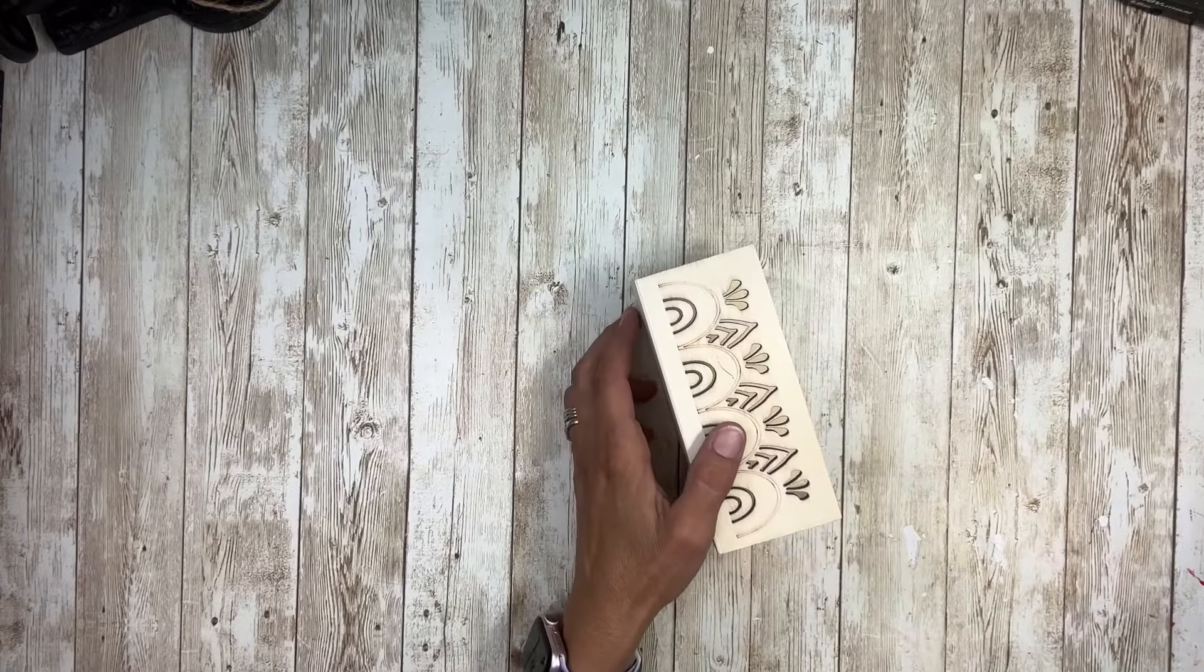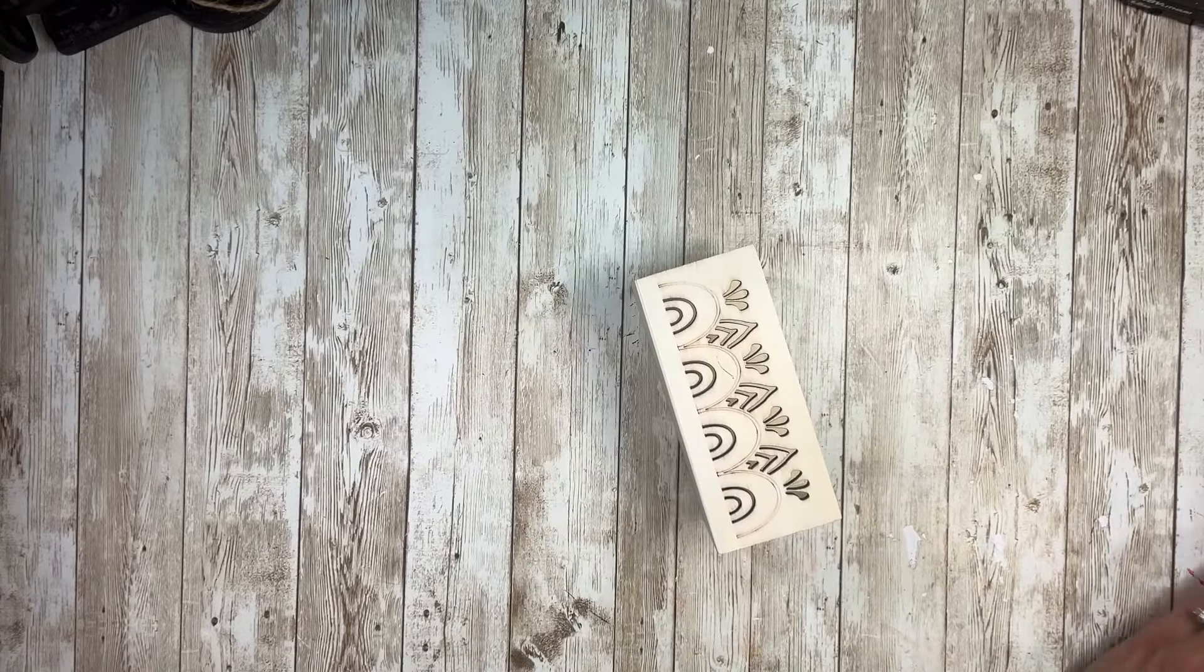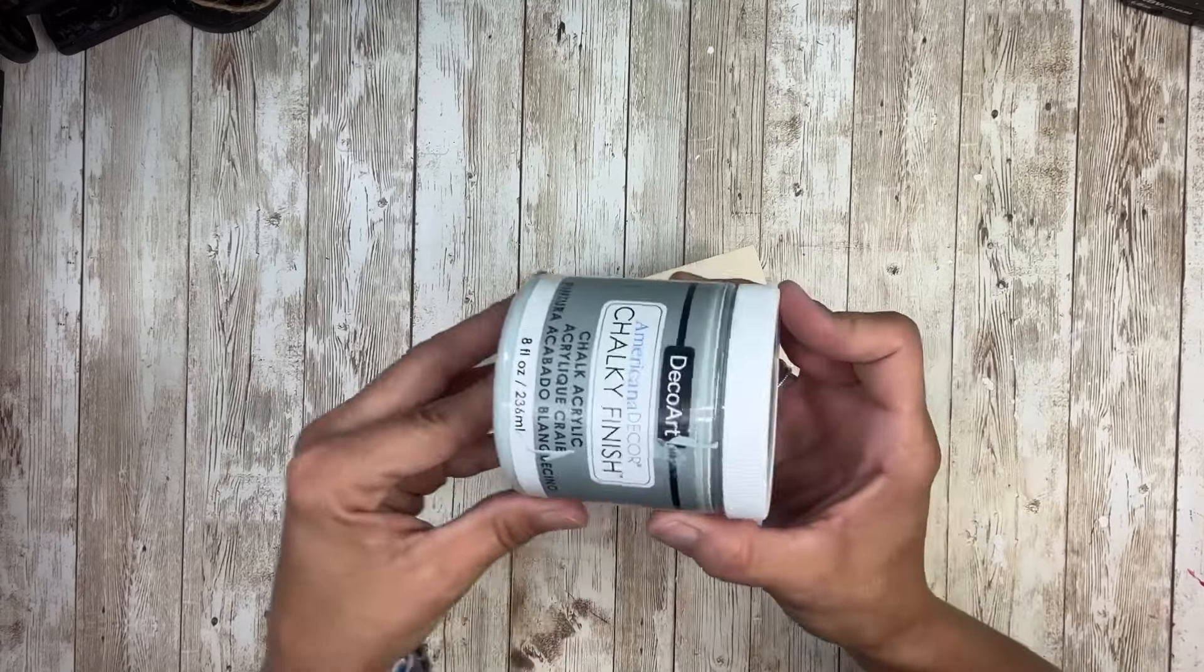Hey everybody, it's Janice with Creating Through Chaos. I'm going to start this project off with this crate that I got at Dollar Tree. It's one of the ones with the pretty cutouts on the front.